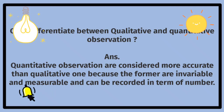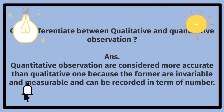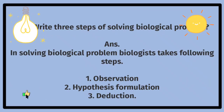Qualitative aur quantitative mushaahaday mein farq karein. Quantitative mushaahaday ko qualitative ke muqable mein zyada durust samjha jata hai, kyunki quantitative mushaahaday tabdil nahi hote aur qabil e paimaish hote hain aur unko tadaad ke lihaaz se record kiya ja sakta hai. Write three steps of solving a biological problem. In solving a biological problem, biologists take the following steps: observation, hypothesis formulation, deduction.